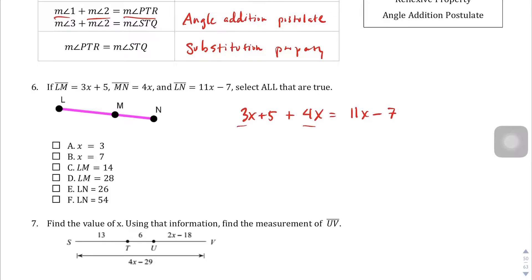Let's go ahead and solve this. Let's combine those: 7X plus 5 equals 11X minus 7. We're going to subtract 7X from both sides. We end up with 5 equals 4X minus 7. Add 7 to both sides. We end up with 12 equals 4X. Divide both sides by 4, and you get 3 equals X. So X does equal 3. That is very true. X does not equal 7.